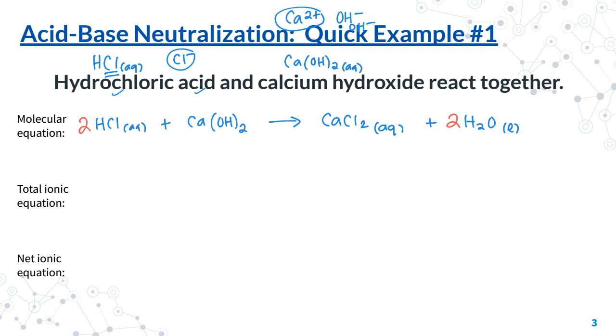For the total ionic equation, recall that we're going to have to separate all of the AQ species. That's because the water rips the ions apart from each other. That means all the charges will come back. So let's take a look at this 2HCl situation. That's going to break up into 2H+ (aq). Again, the charges come back. Plus 2Cl- (aq).